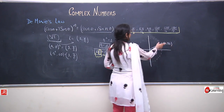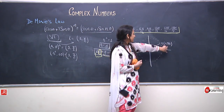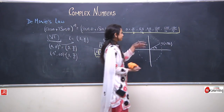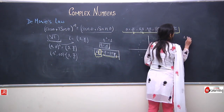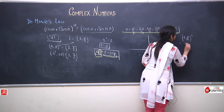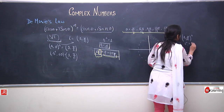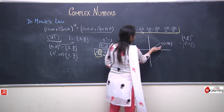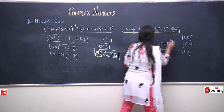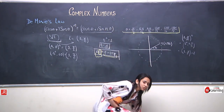Let us prove that z equals (1, pi by 12) is actually a solution. When I raise (1, pi by 12) to the power 6, I get 1 to the power 6 and the argument becomes 6 times pi by 12, which is pi by 2. So I get (1, pi by 2), which equals iota. Thus (1, pi by 12) is indeed one root of the equation.